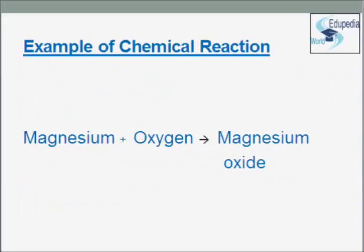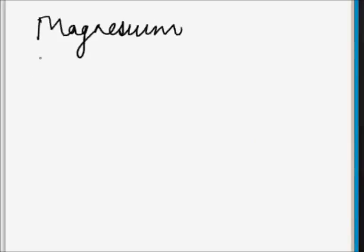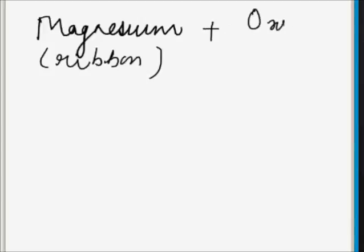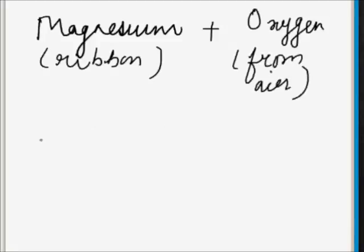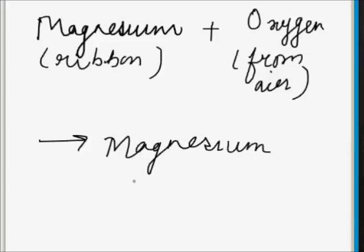Now let us take an example of a chemical reaction. In this chemical reaction, magnesium is reacting with oxygen of air. Magnesium, in the form of a ribbon, when it comes in contact with oxygen from air, magnesium oxide is formed.